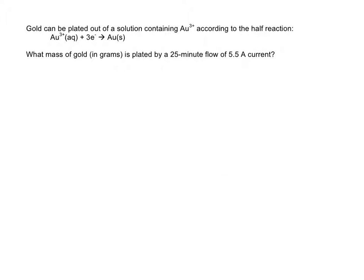The example I have here is gold can be plated out of a solution containing Au3+, according to the half reaction: Au3+ plus three electrons goes to Au solid. And the question is, what mass of gold in grams is plated if we have a 25-minute flow of 5.5 amps current? So the information we're given here, or the relationships that we're going to need, are that three moles of electrons corresponds to one mole of gold. We'll need that as a conversion factor. We know that our current, which is coulombs per second, is 5.5, so an amp is the same as a coulomb per second. And then we know that our time for this reaction is 25 minutes.